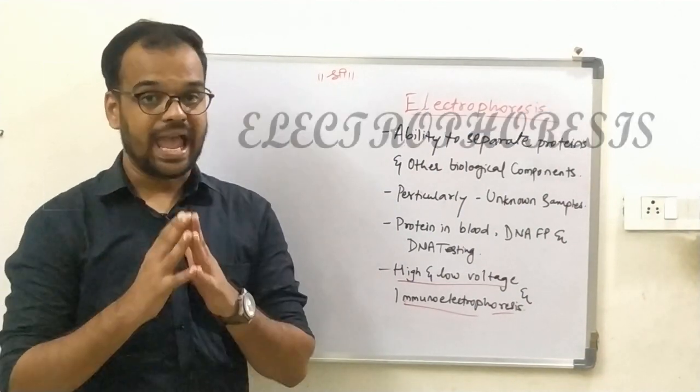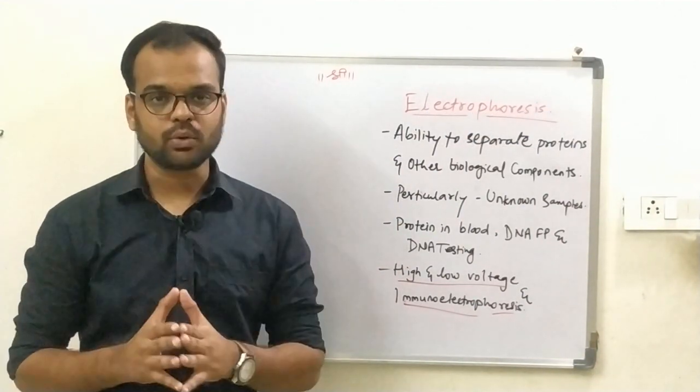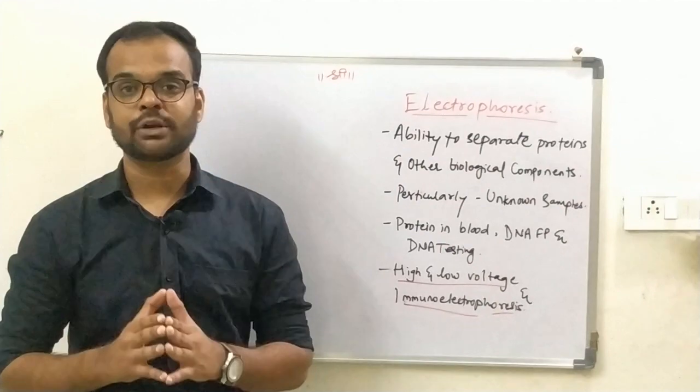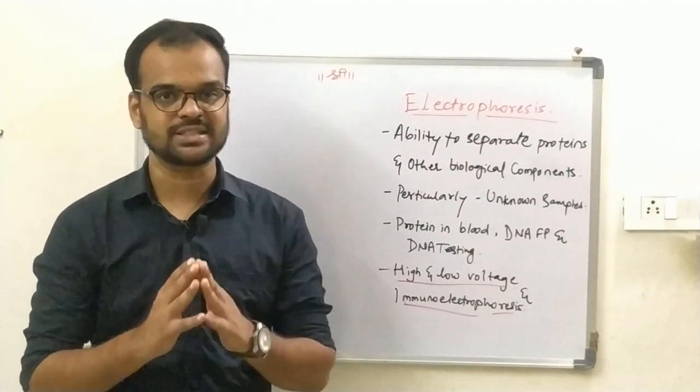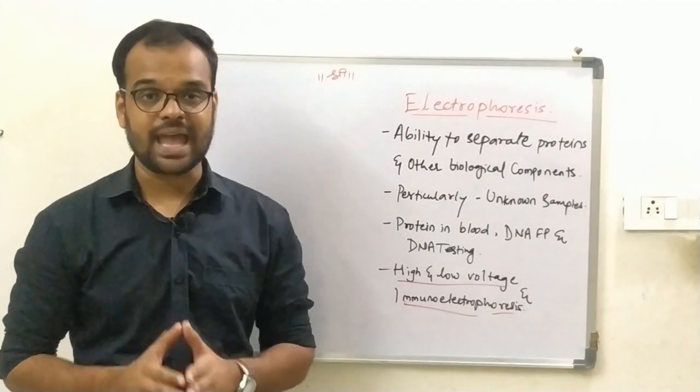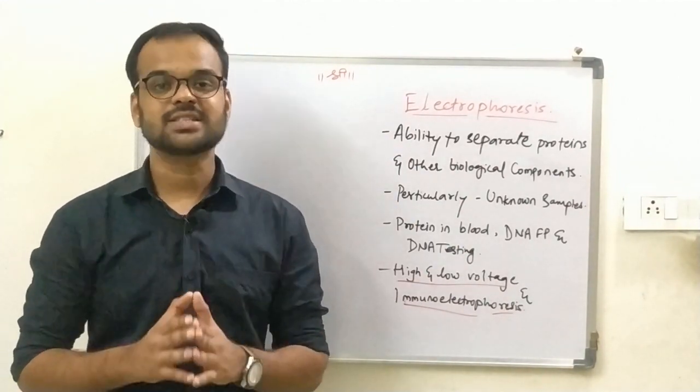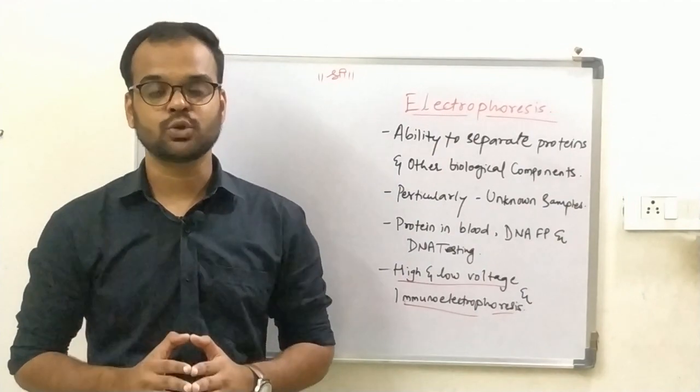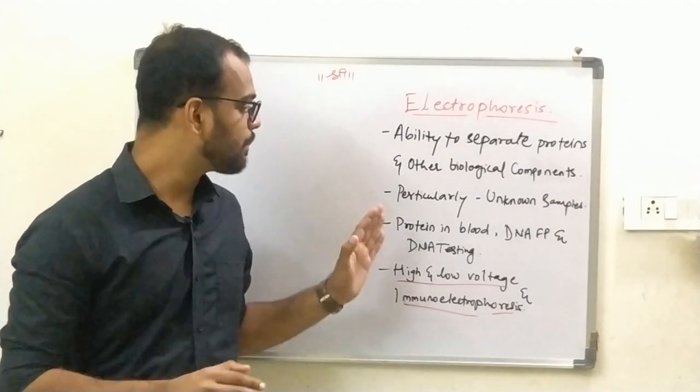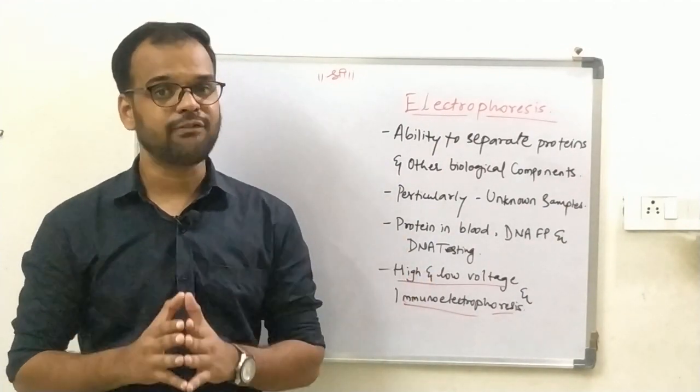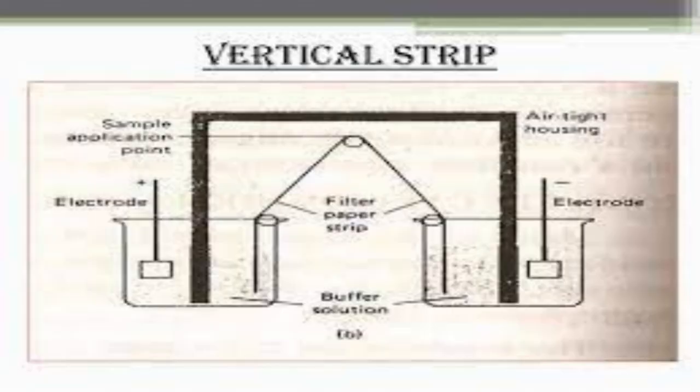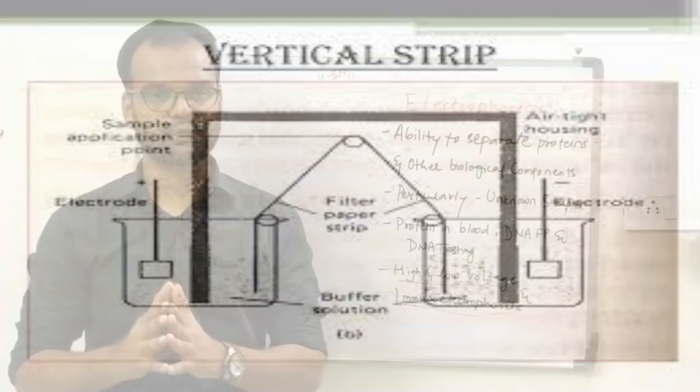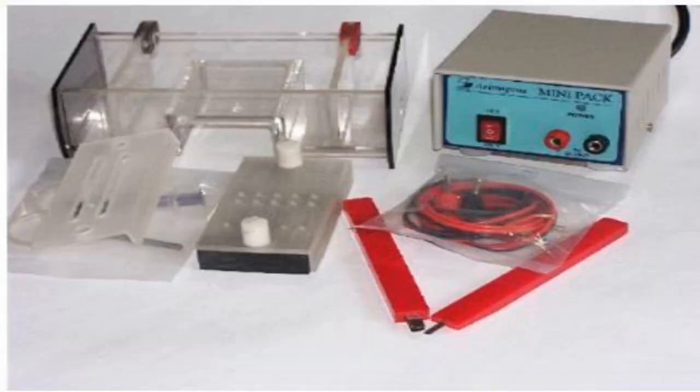Electrophoresis. The ability to separate proteins and other biological components mean that electrophoresis is popular in the field of forensics, particularly in the analysis of unknown samples. This technique is mainly used to separate and analyze protein in blood for DNA fingerprinting and DNA testing. The different techniques are high and low voltage electrophoresis and immunoelectrophoresis.